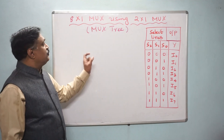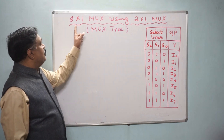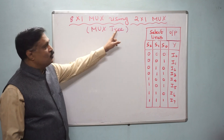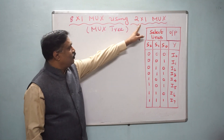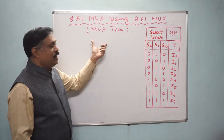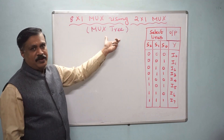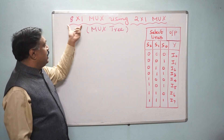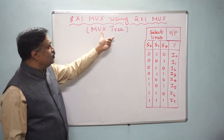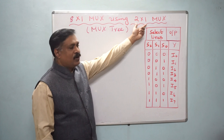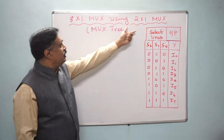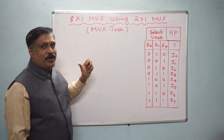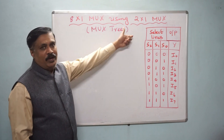Today we are going to see 8 by 1 MUX using 2 by 1 MUX — that means a MUX tree. That means designing a higher order multiplexer using a lower order multiplexer. Last class we have seen 4 by 1 MUX using 2 by 1.